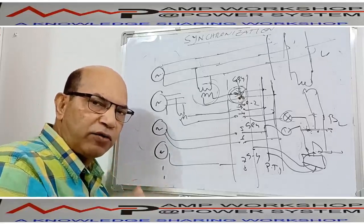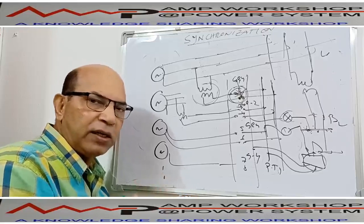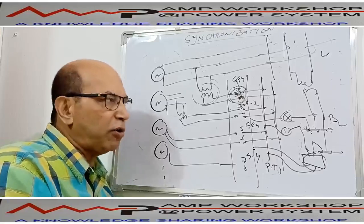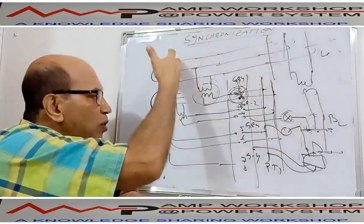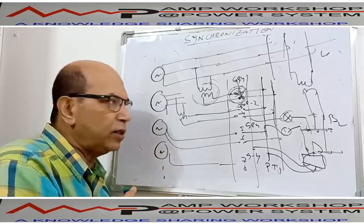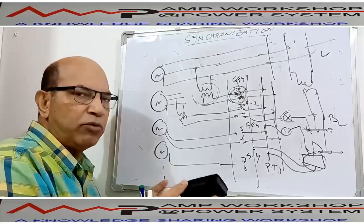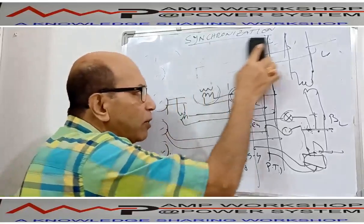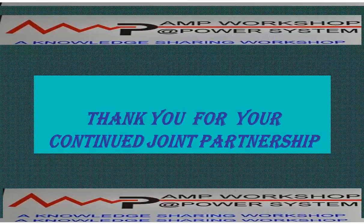Next session will discuss active power sharing — after synchronization, how the load is shared between machines, as the machines may not take load equally. Then we will discuss reactive power sharing. These two sessions will complete the generator control system topic. Thank you very much — this was the session on synchronization of alternating generators.